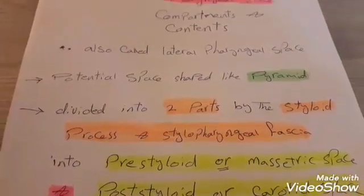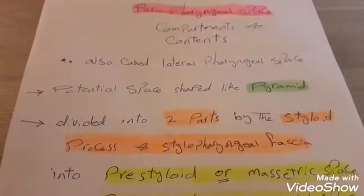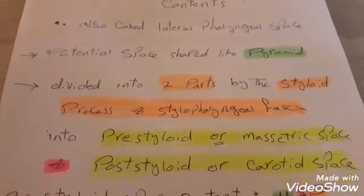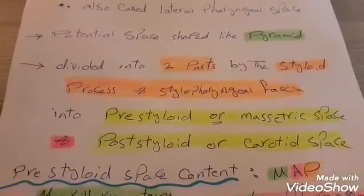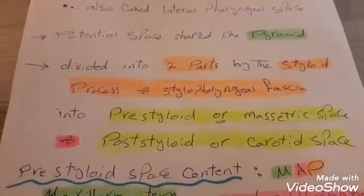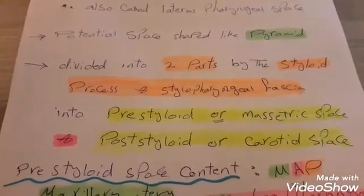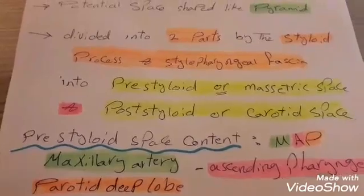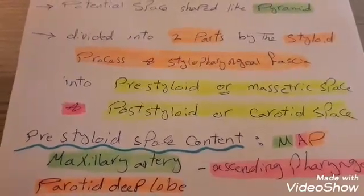So, the parapharyngeal space is divided by the styloid process and the stylopharyngeal fascia into pre-styloid and post-styloid spaces, and each one has its own content. Have a nice day. Thank you for watching.